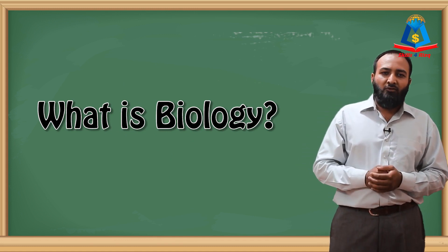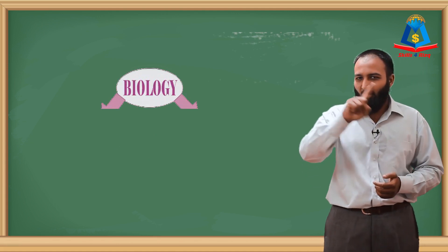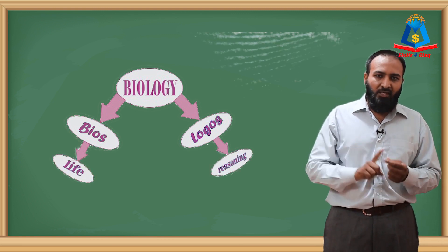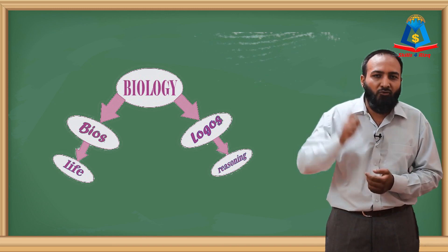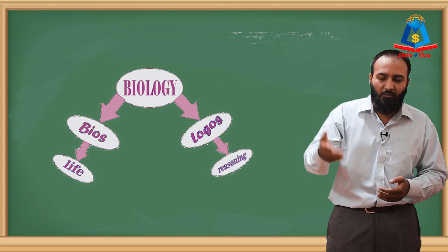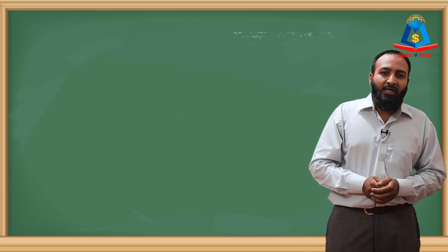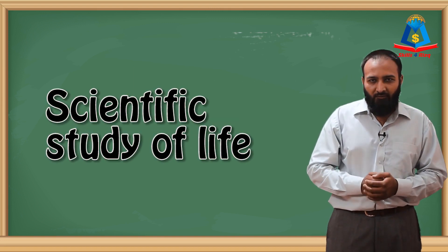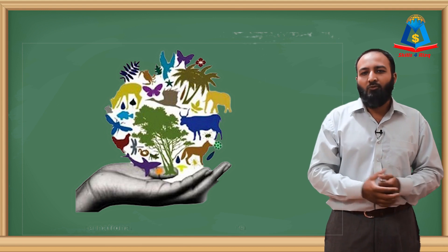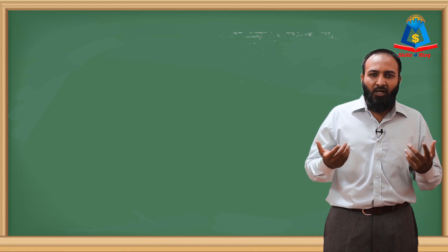Biology is derived from two Greek words: bios and logos. Bios means life, and logos means thoughts, reasoning, and discussion — to think about, discuss, and understand something. So bios and logos together give us biology. What is biology? It is the scientific study of life — using the principles of science to study living organisms. Studying living organisms is biology.